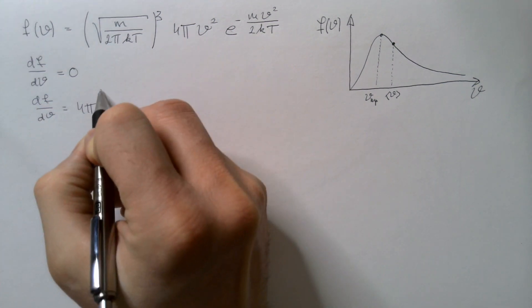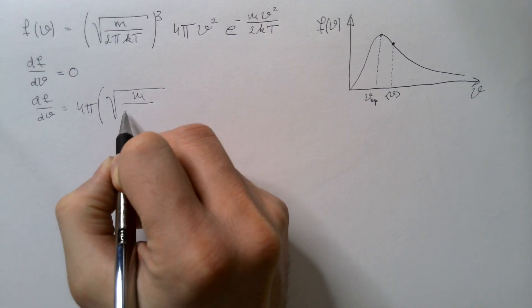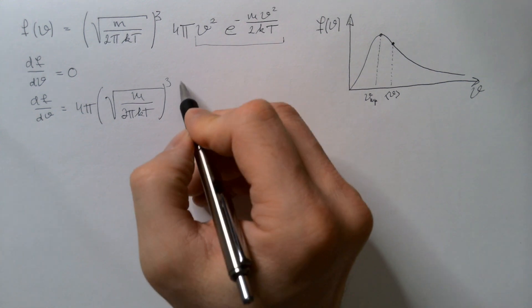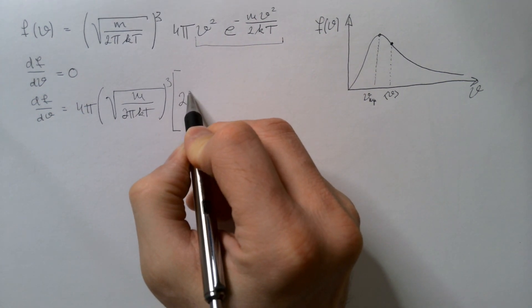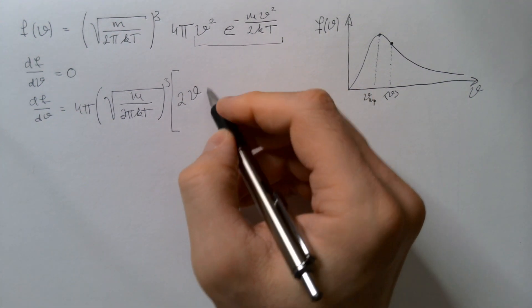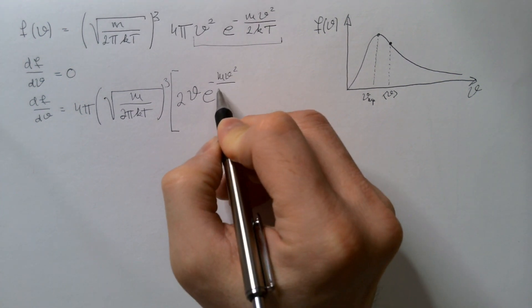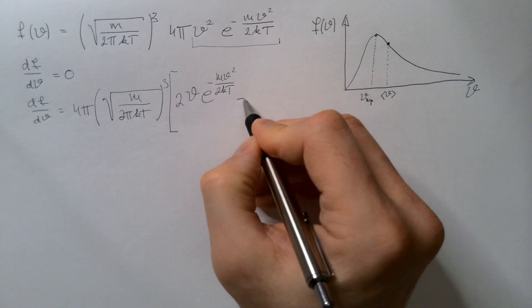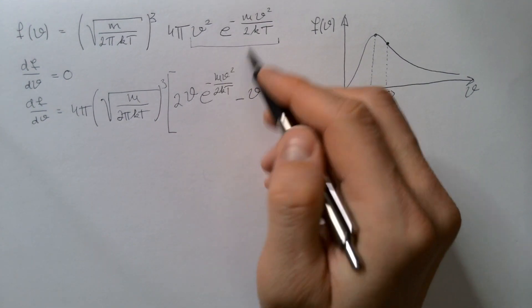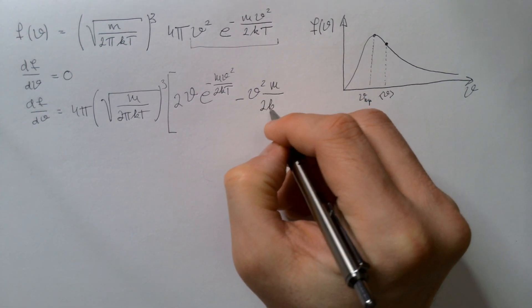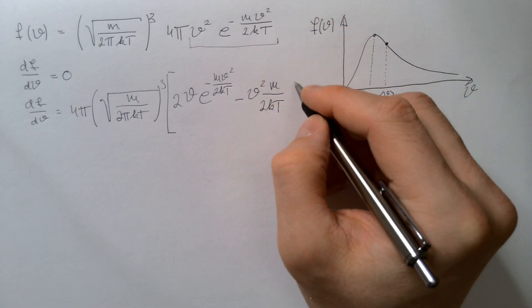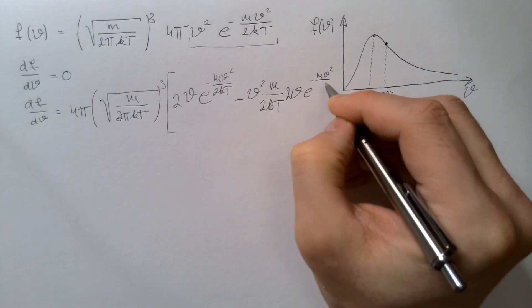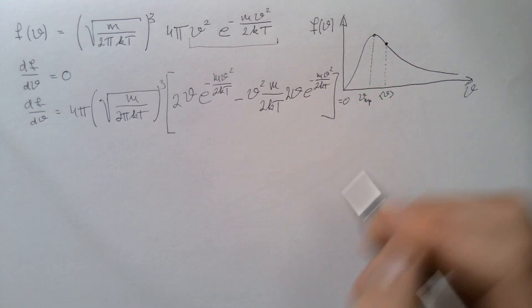df/dv is further equal, so we have 4π, and then this constant, square root, m divided by 2πkt to power 3, and then I need to find derivative of this product over here, so it will be 2v, and then I multiply this term over here, e to negative mv squared divided by 2kt, and then I will take derivative of this exponential function and multiply with this, so it will be negative because of this negative, so v squared, that is this one, and then I have m divided by 2kt times derivative of this, which is 2v, and then this exponential function, e to negative mv squared divided by 2kt.